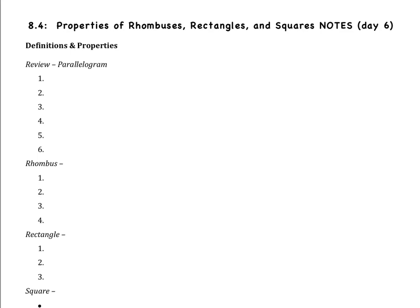Welcome to section 4. Today we're going to branch out a little bit and learn about three specific types of quadrilaterals: rhombuses, rectangles, and squares. These fall under the parallelogram family. We're going to talk about their properties and then apply those properties.